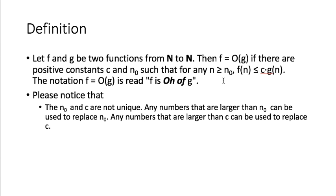For example, if your n₀ is 100, so for any n greater than or equal to 100 you have f(n) less than or equal to c times g(n). Of course, any number greater than 1000 is definitely greater than 100, so you can use 1000 to replace 100. Using a larger number to replace n₀ is no problem.